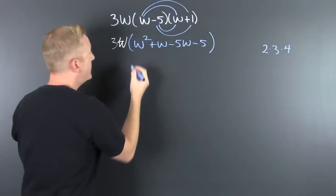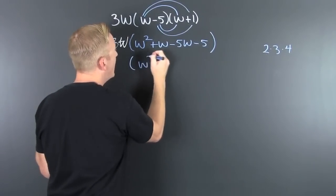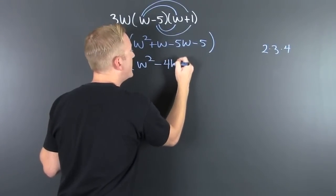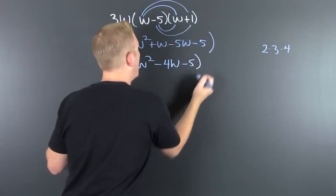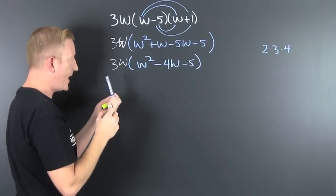Gather, collect, and combine. We finally have W squared, plus W minus five W is minus four W, minus five. So I still have that three W on the outside.